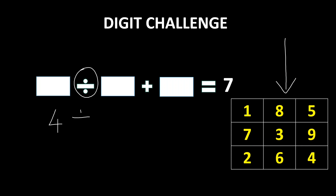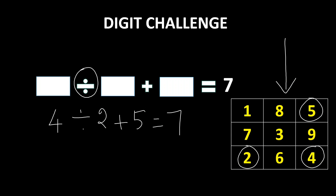Let's say your solution to this question is 4 divided by 2 plus 5 equals 7. You would lose a lot of time figuring out the positions of 4, 2, and 5 on the numerical pad because they are not in their natural places. The tip to solve this question is to fix the value of z from the numerical pad first, such that this value is less than 7 but not very close to 7. Keep your eyes on the numerical pad and fix any number that you spot which is less than 7.